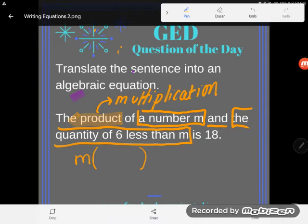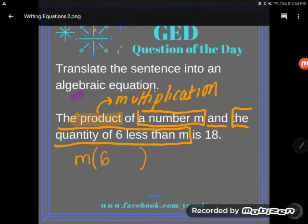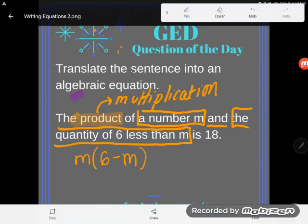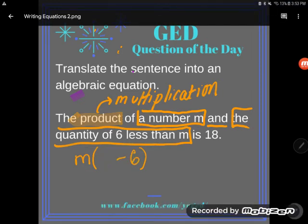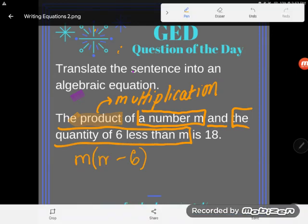Okay, so that language, the quantity, told me to open up parentheses. So now I just need to think about this part: six less than m. Now be careful, a lot of students would write six less than m incorrectly, but if you've been tracking with me in any of the videos, you know that six less than does not mean six minus, it means minus six. I'll say that again: six less than means minus six. And what are you going to minus six from? Well, you'll minus it from the m. So there it is.